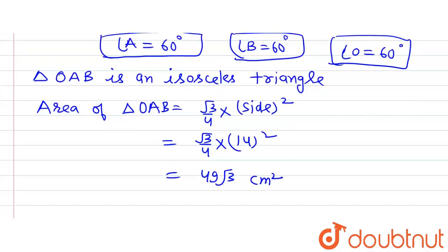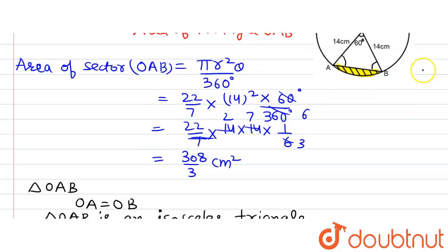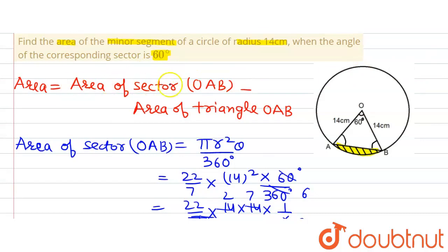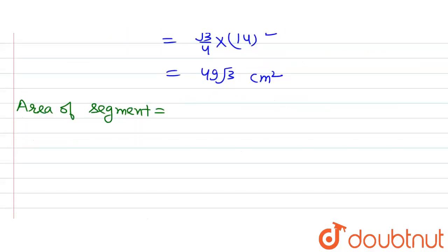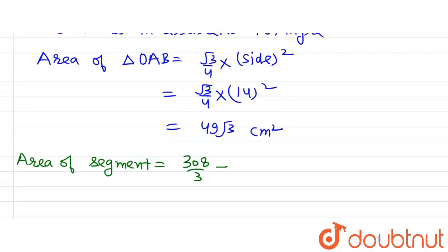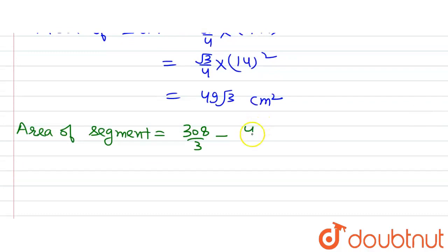Now substituting both values into the expression for the area of the minor segment: area of segment = area of sector OAB − area of triangle OAB = 308/3 − 49√3 cm².